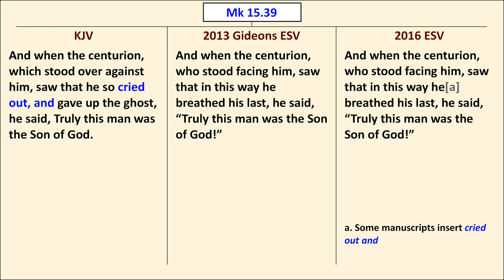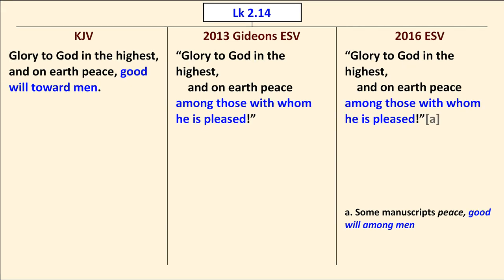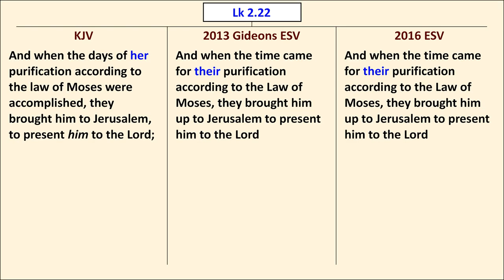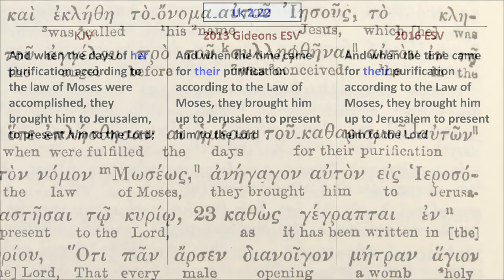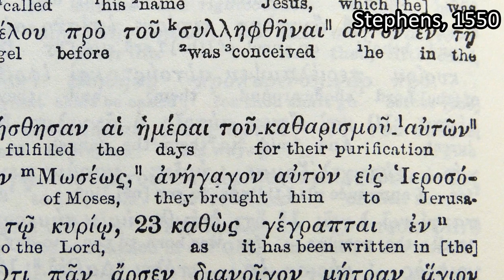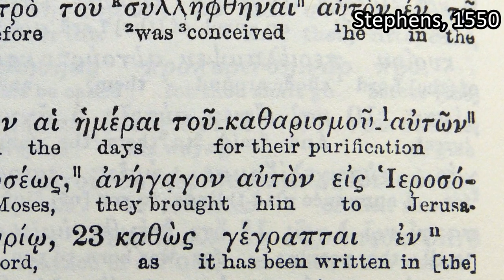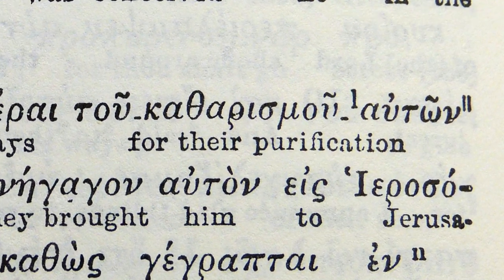In Luke 2:14, the King James Version reads "Glory to God in the highest, and on earth peace, goodwill towards men," but the Gideon's ESV follows the ESV with "among those with whom he is pleased." The TR reading is in the ESV's footnote. In Luke 2:22, the King James Version has "her purification," which is not in the majority of manuscripts. The Gideon's ESV and the 2016 ESV have "their purification." Incidentally, this is one of those places where calling the TR a misnomer applies — some TR Greek New Testaments actually read "their" in this passage.